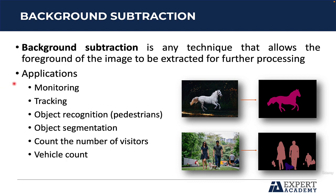There are several applications that can be developed using background subtraction. For example, monitoring a given scenario — suppose that there is a house in the background and a person suddenly appears, so an alarm can be triggered because maybe there is a thief. It can also be used for object tracking. After the algorithm identifies the object, such as the horse, another algorithm can be used to track the horse during the video.